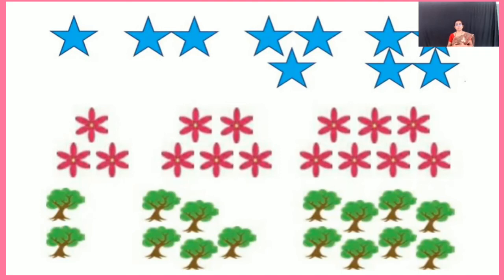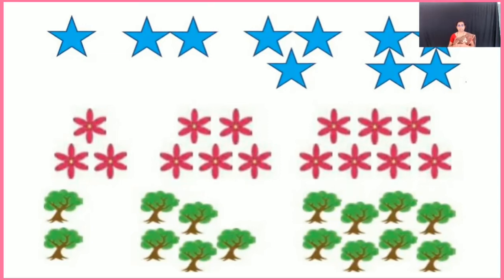In the second example, a flower is used as the basic shape. The first term has three flowers, the second term has five flowers, and the third term has seven flowers. This means each term has two more shapes than the previous one.